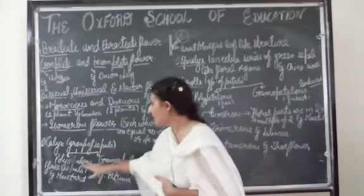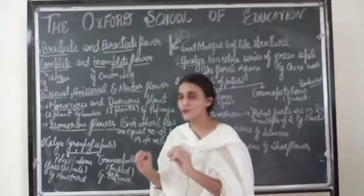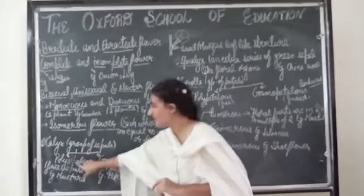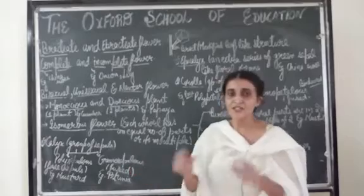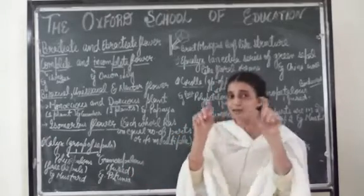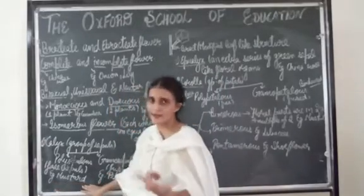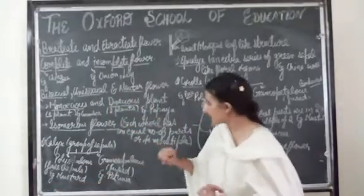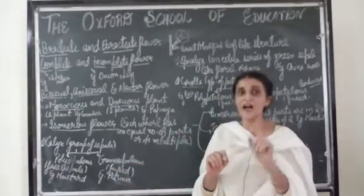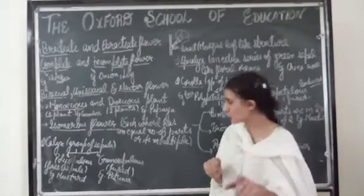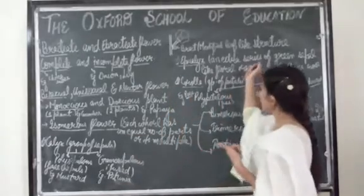If the sepals are free — that means they are not fused with each other — we use the term polysepalous. Poly means free; sepalous means presence of sepals. So all the sepals present in a flower are free and not fused with each other — example is mustard. The second term is gamosepalous. Gamo means fused — if all the sepals are fused with each other, they are known as gamosepalous — example is petunia.